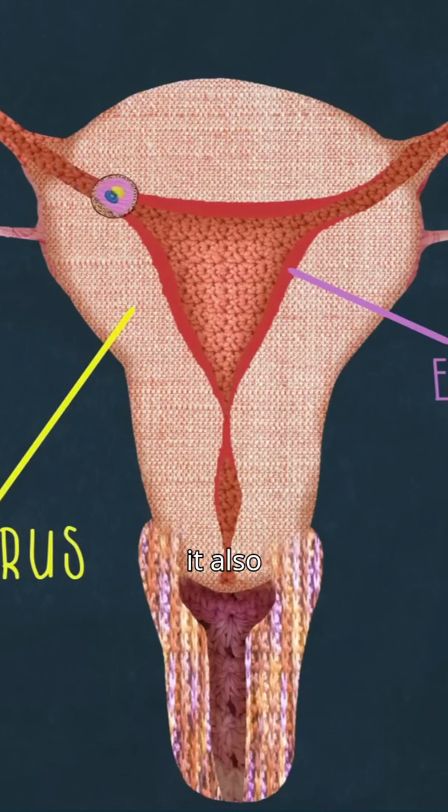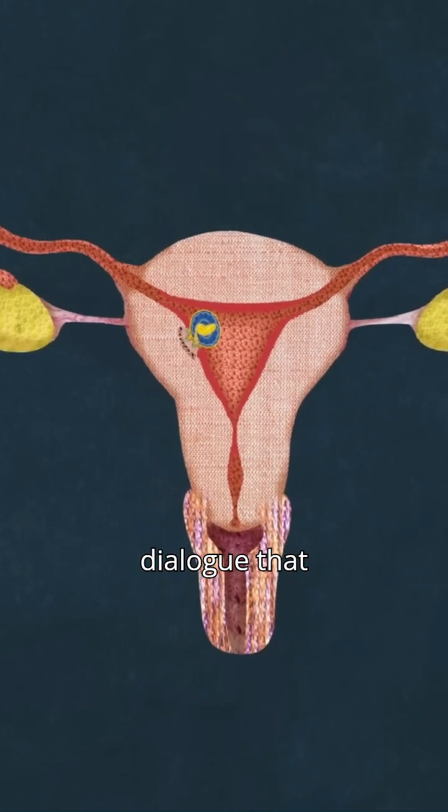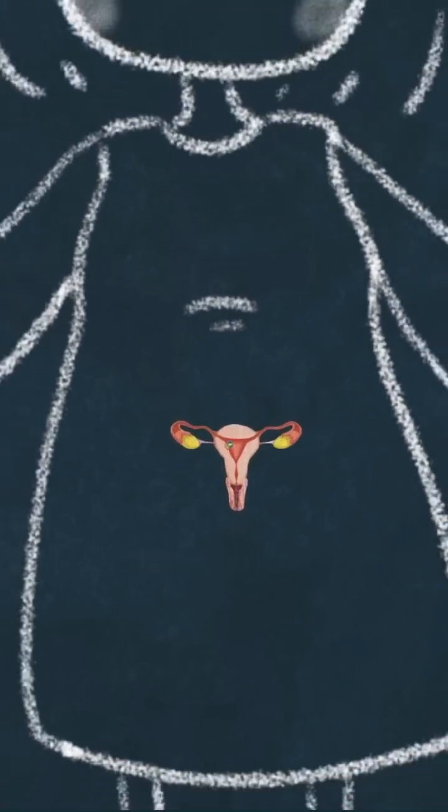But in doing so, it also selected for the most vigorously invasive embryos, creating an evolutionary feedback loop. The embryo engages in a complex, exquisitely timed hormonal dialogue that transforms the endometrium to allow implantation.